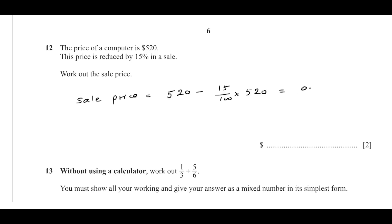Or simply 0.85 times 520. So 0.85 times 520 equals 442, so the answer is $442.